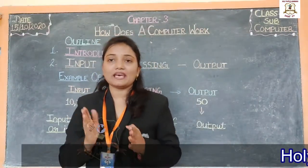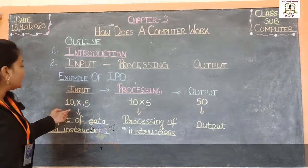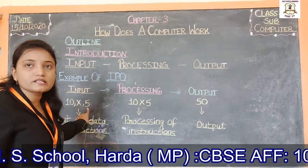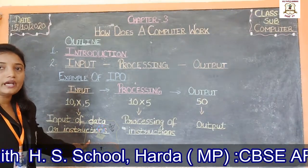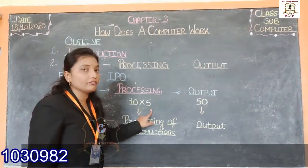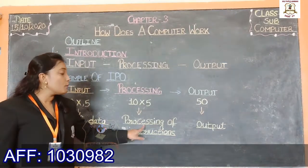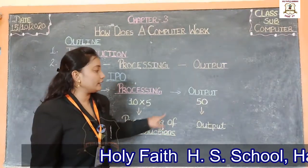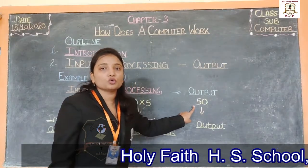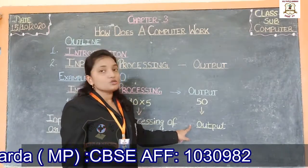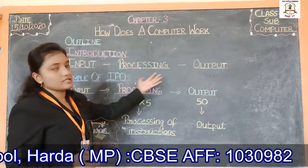In the same way, a computer works. Let us understand with another example: 10 × 5. This is the input of data or instructions. Now the computer processes it — 10 × 5, this is the processing of instructions. And we get the output: the answer is 50. So this is the output of the instructions.